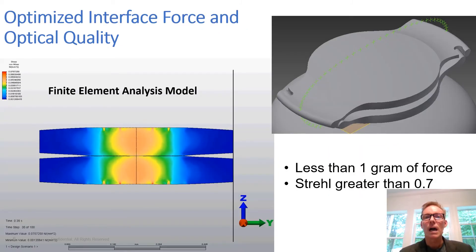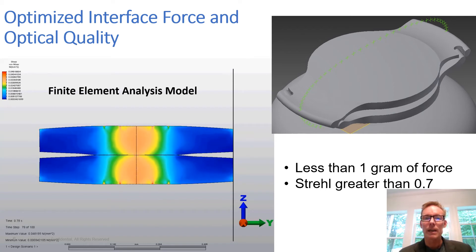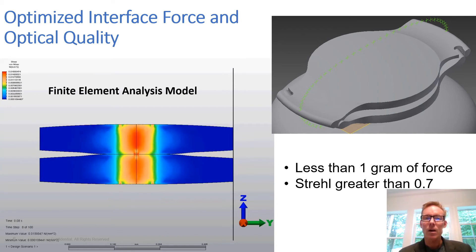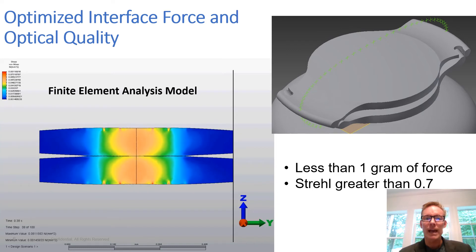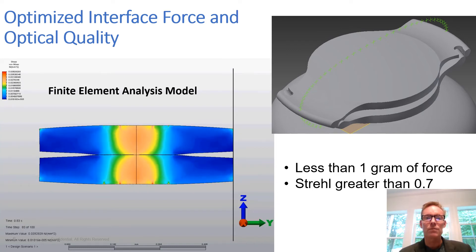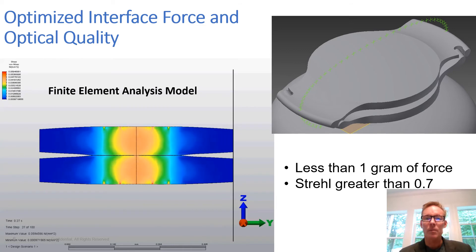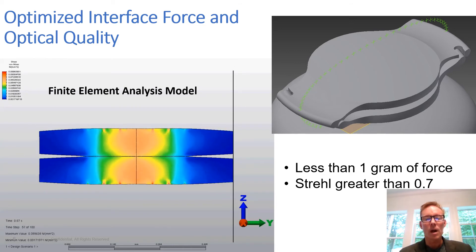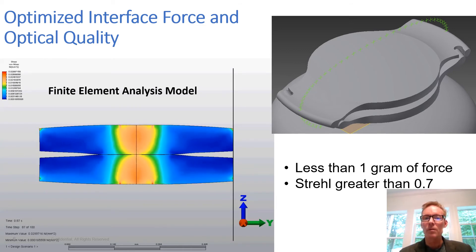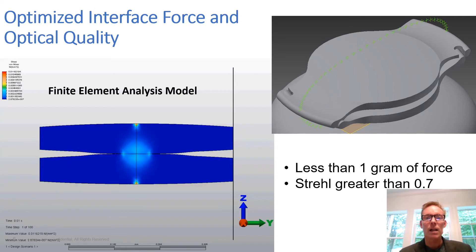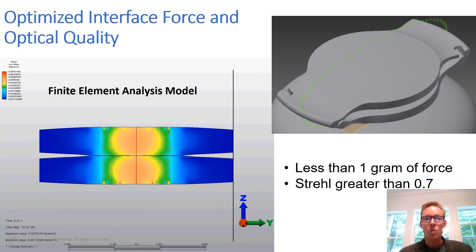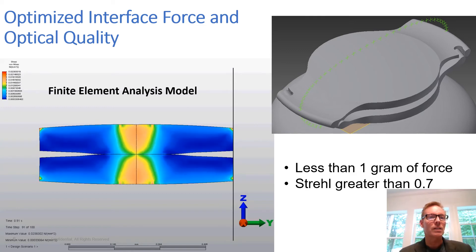The key to this type of design is minimizing aberrations at the applanated interface. In the IOL, it will need to be actuated with less than one gram of axial force and have good visual quality throughout the accommodative range. This process of optimization using coupled finite element analysis and ray-traced software was outlined in our publication in Translational Vision Science and Technology.